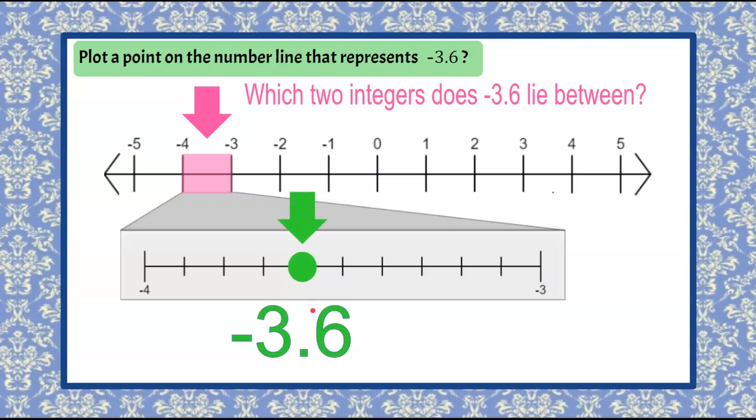and identify negative 3.6 on the number line is between negative 3 and negative 4, closer to negative 4 than negative 3.